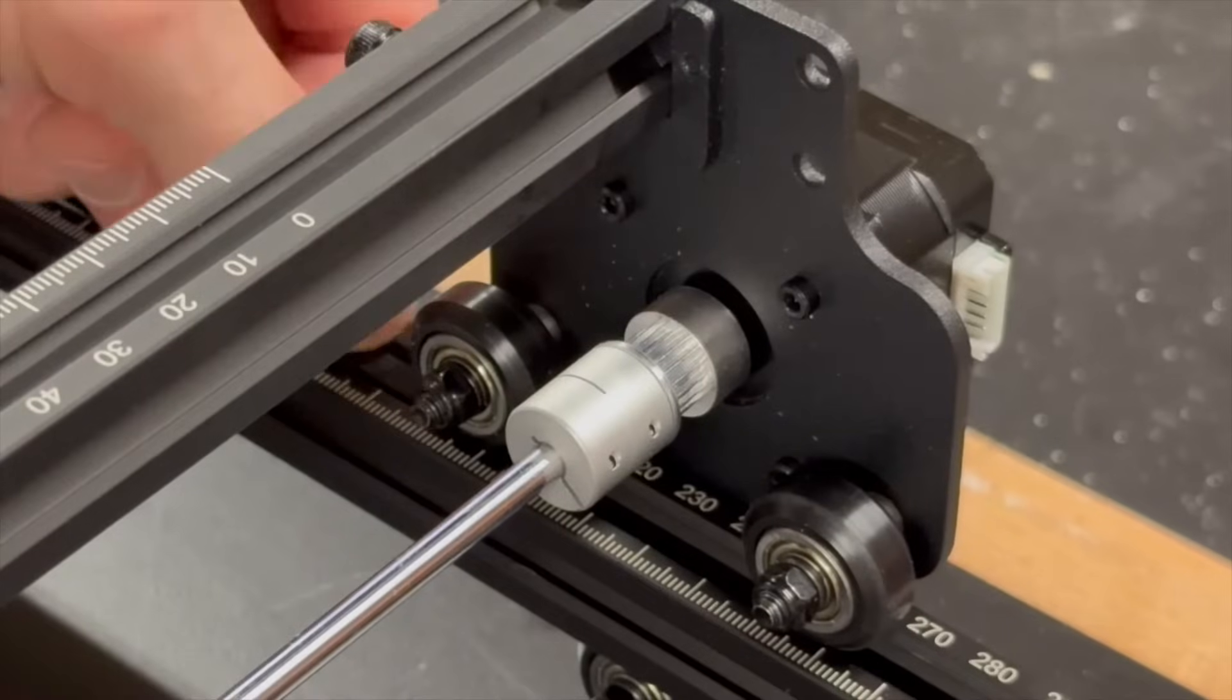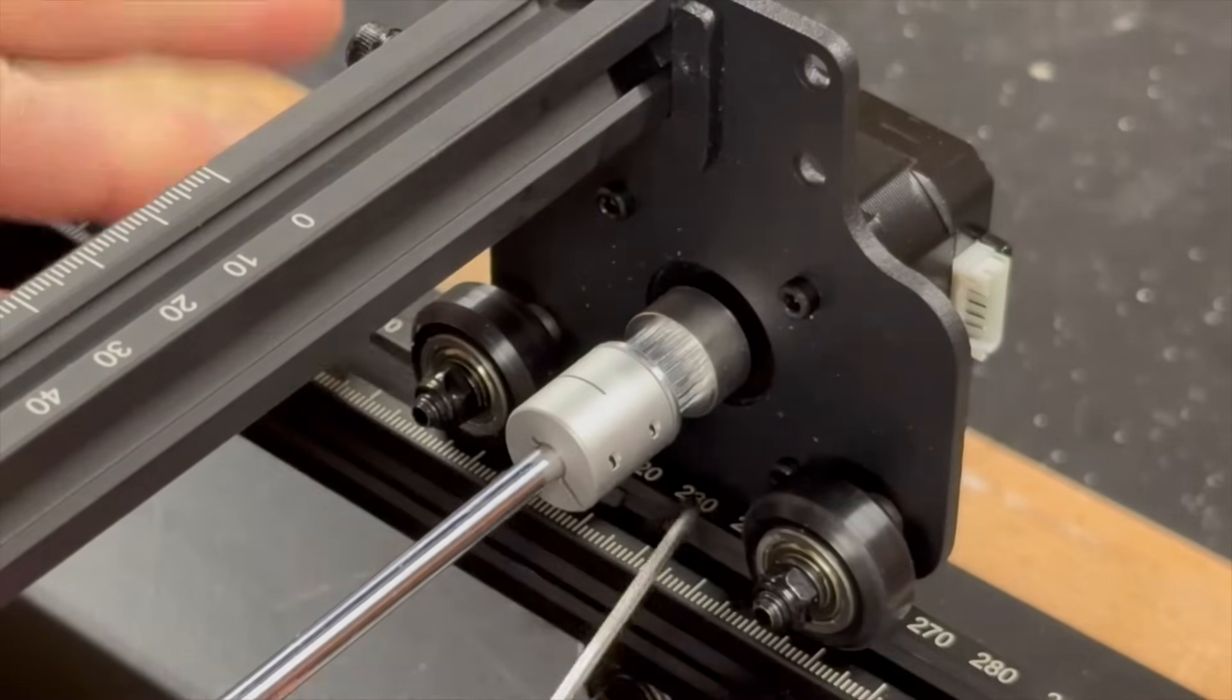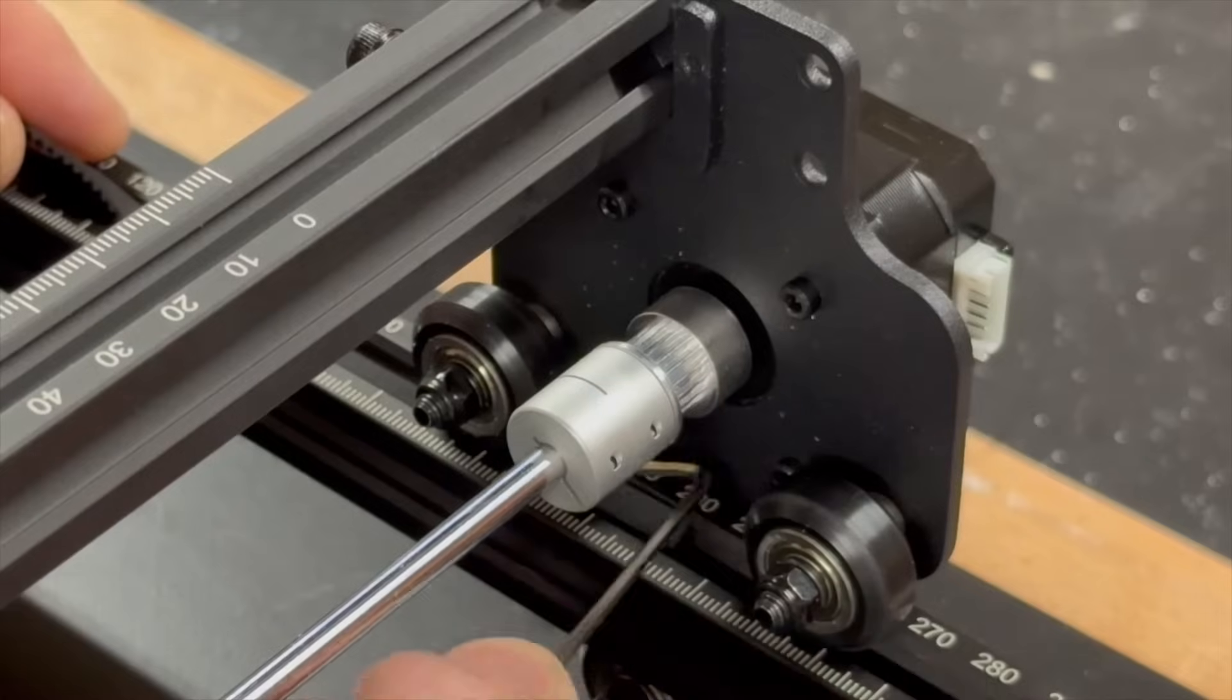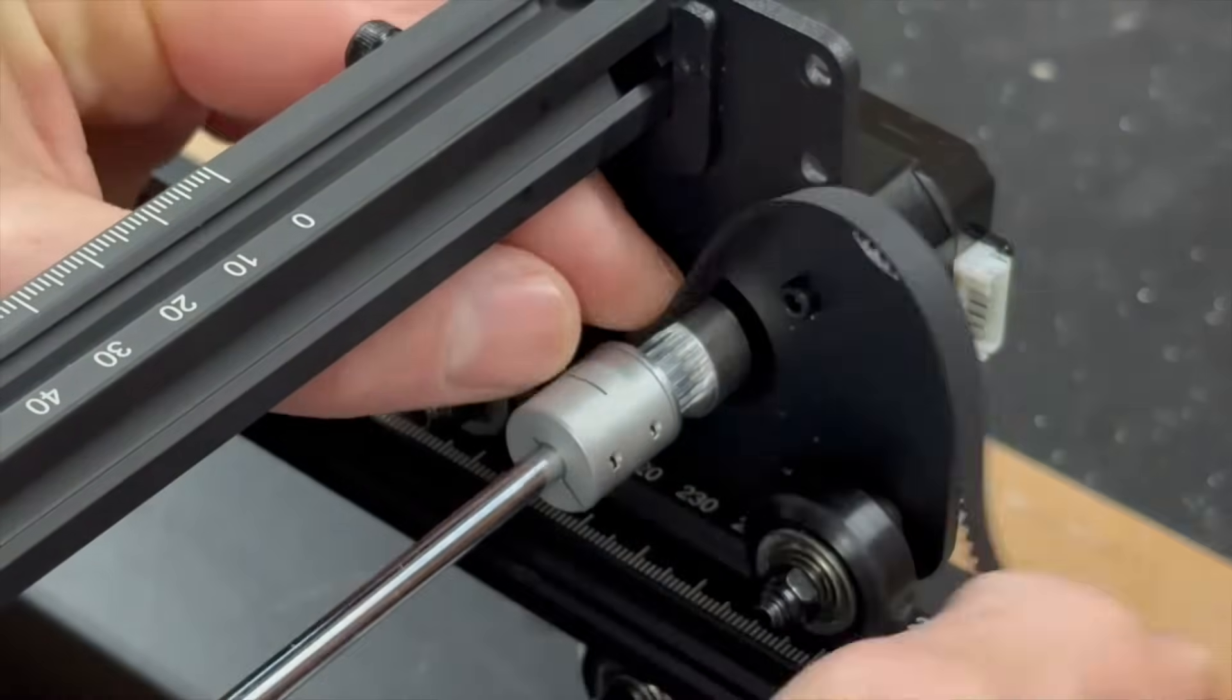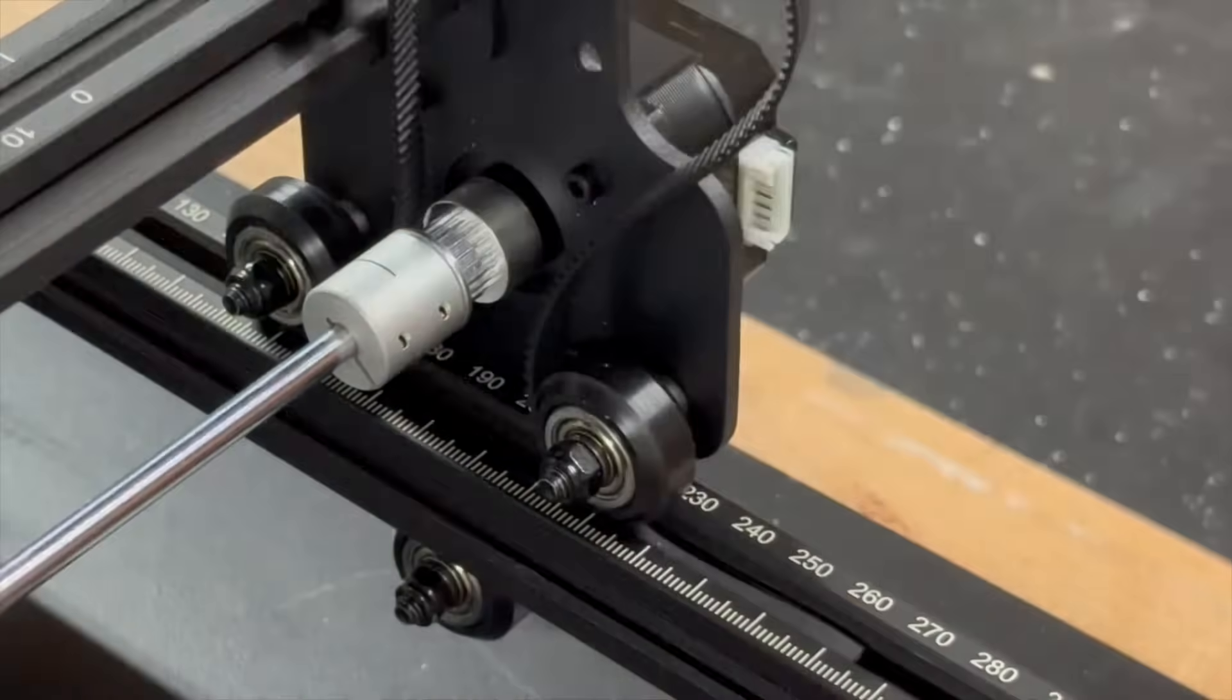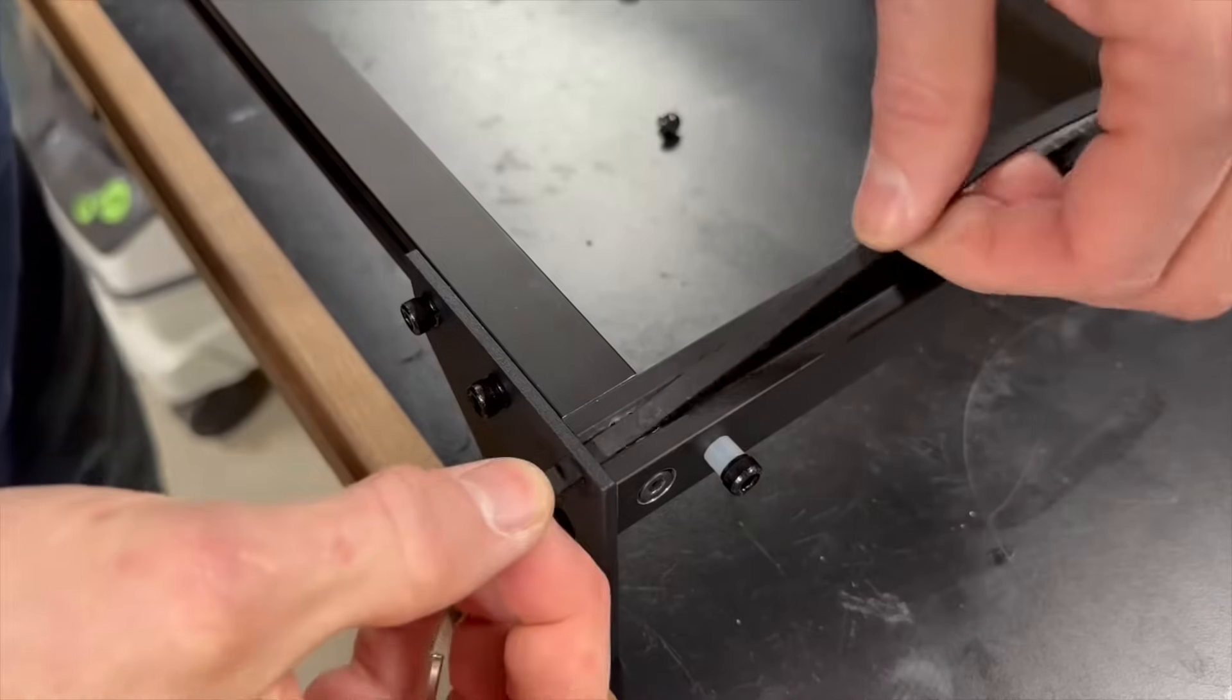The belts go in smooth side up and are carefully snaked through the drive gear. Without these timing belts properly installed, the servo would be unable to move the machine up and down the y-axis. The end of the timing belt is fed through a little hole in the leg.